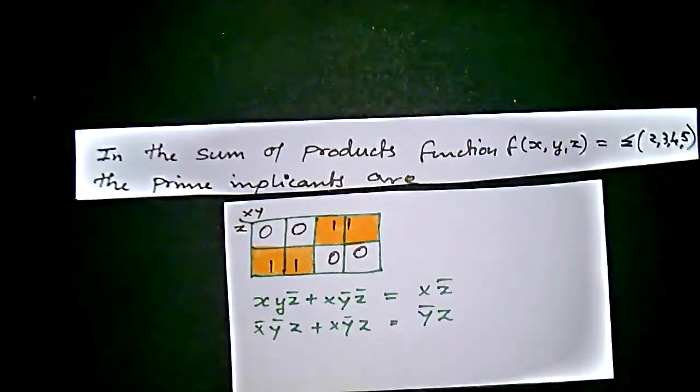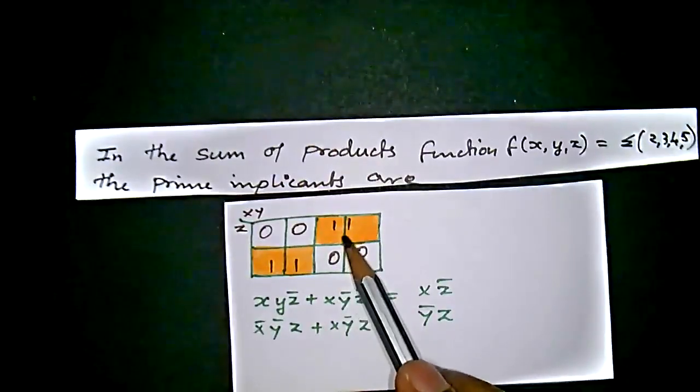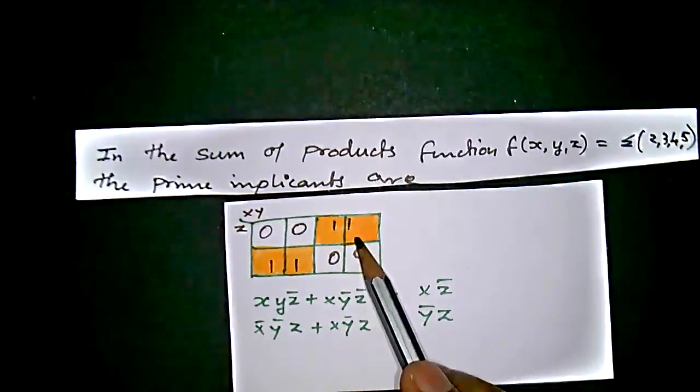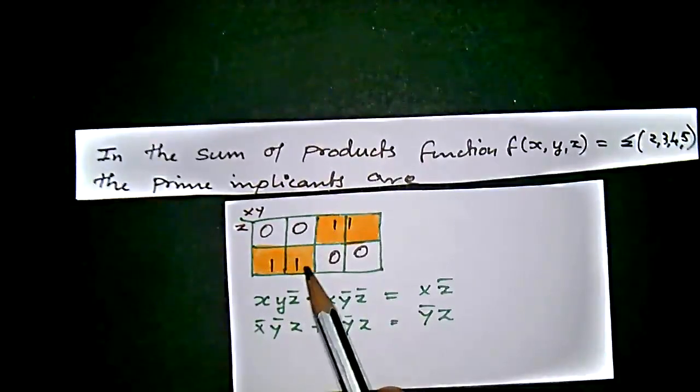And the truth table has the third term, second term, and fourth term and fifth term having the 1s. So we will get that into groups.